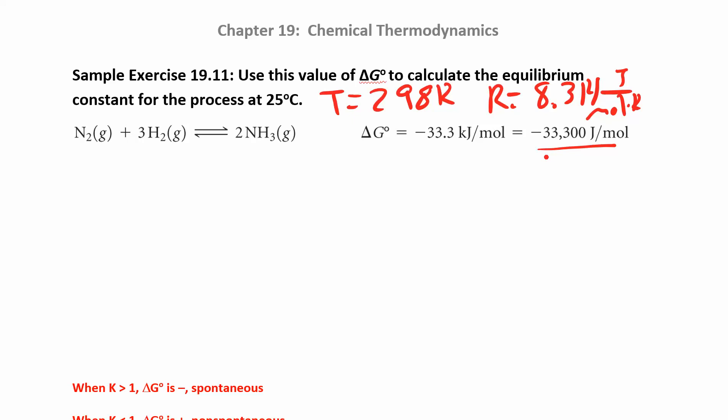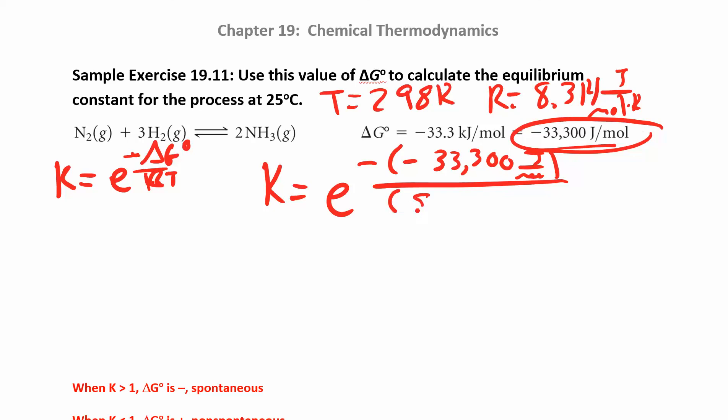We have K equals E to the negative delta G naught over R times T. We're just going to plug in. Notice how I have a negative here, and my delta G is also negative, so I have a negative times a negative, which is going to give me a positive. If you drop a negative somewhere, it's going to screw you up completely. Divide it by R times T, so 8.314 times 298. So you're going to find that number and then do E to that number.